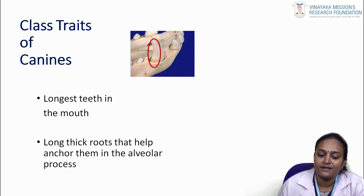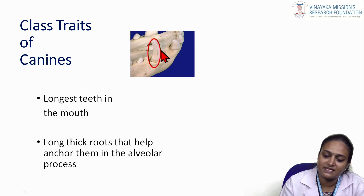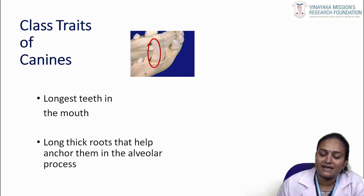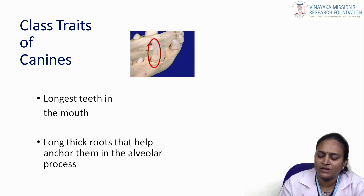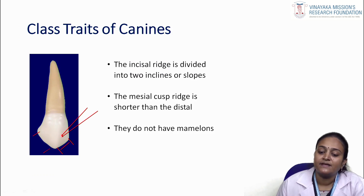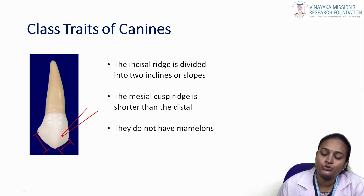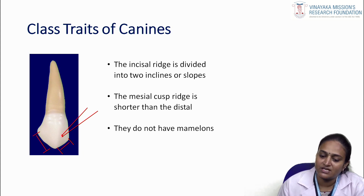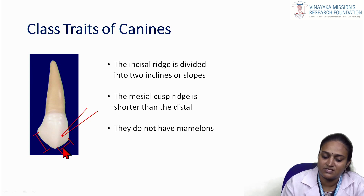The classic triads of canine: first, it is the longest tooth in the mouth — seen in animals and humans alike. It has a long thick root that helps to anchor it in the alveolar process. The incisal ridge is divided into two inclined slopes — mesial and distal — and the mesial ridge is shorter than the distal ridge.